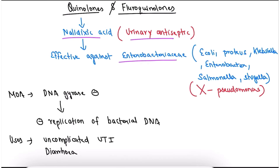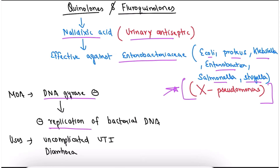The Enterobacteriaceae family includes E. coli, Proteus, Klebsiella, Enterobacter, Salmonella, and Shigella. Nalidixic acid is not effective against Pseudomonas. The mechanism of action is DNA gyrase enzyme inhibition, which basically inhibits the replication of bacterial DNA. Its uses include uncomplicated UTI and diarrhea caused by Salmonella and Shigella.